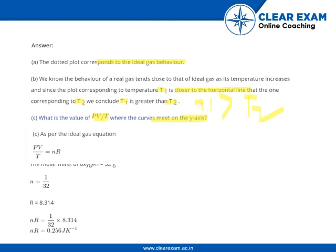The molar mass of oxygen is 32 grams, therefore n equals 1 by 32, and R is 8.314. Therefore nR would be 0.256 joules per kelvin.